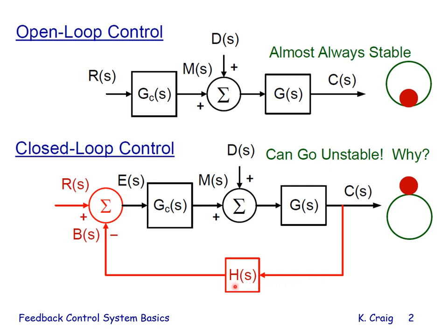The feedback element H produces the feedback signal B. That feedback signal is compared to the reference input. Based on that difference E, the actuating signal, the actuating signal is sent to the controller, and the controller acts on that signal to make the control variable follow the reference input.